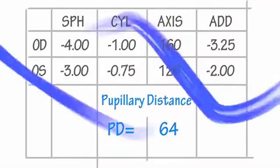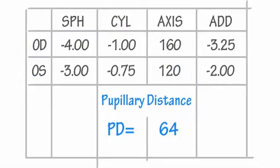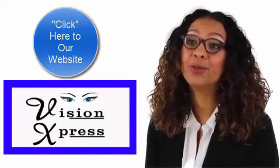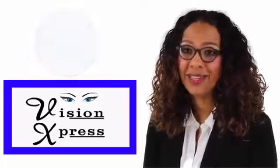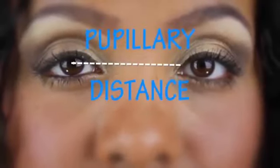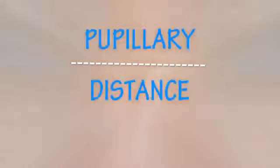Finally, we have PD, which means pupillary distance — the distance between one pupil and the other. Now if you're panicking because you don't have PD written on your prescription, don't worry. Please click here to check our tutorial on how to measure the distance yourself.